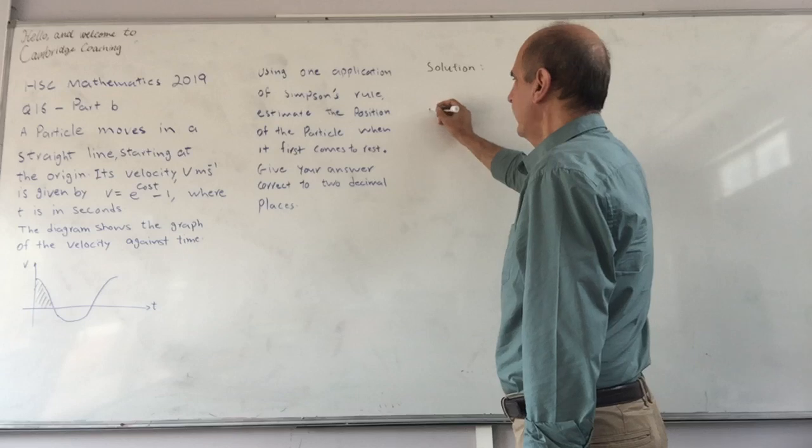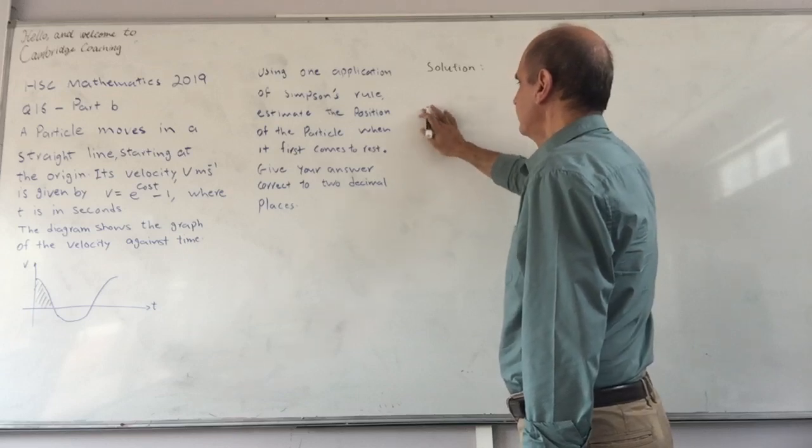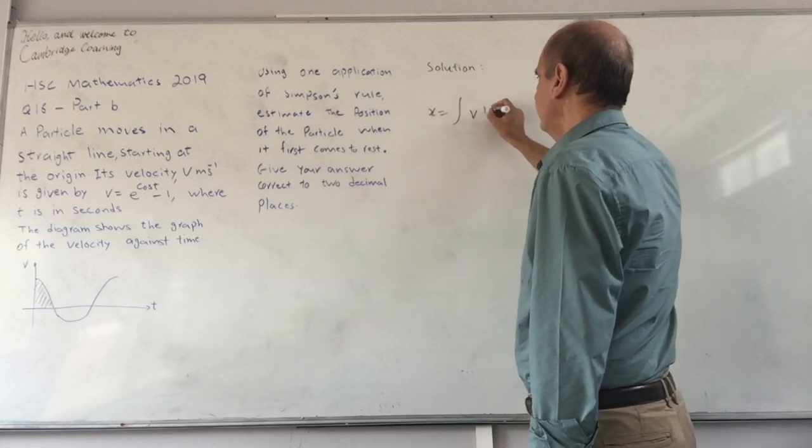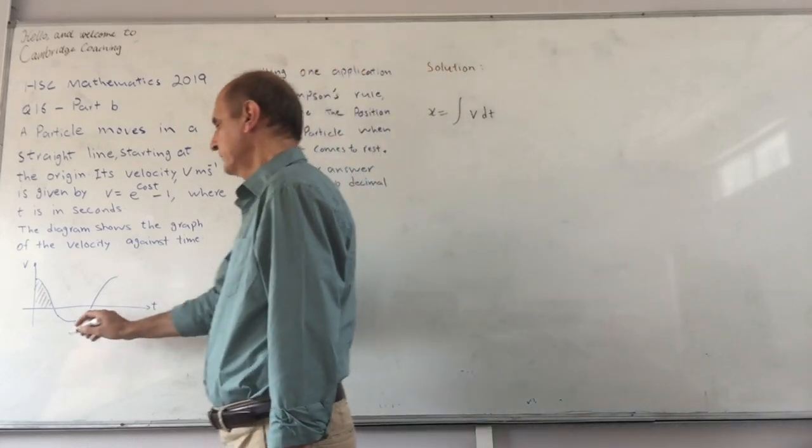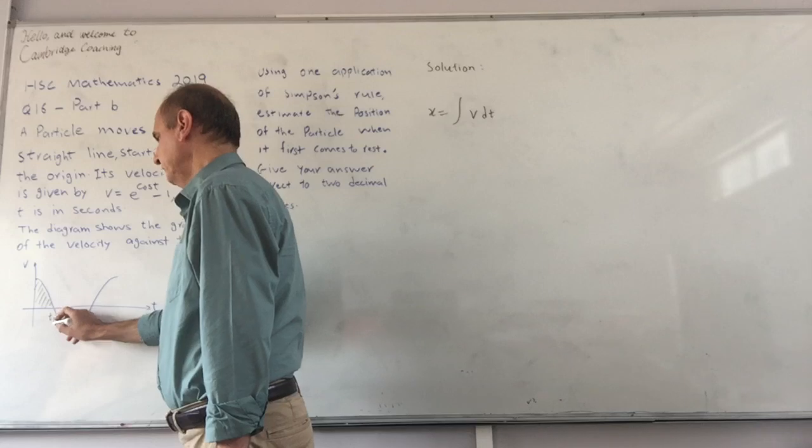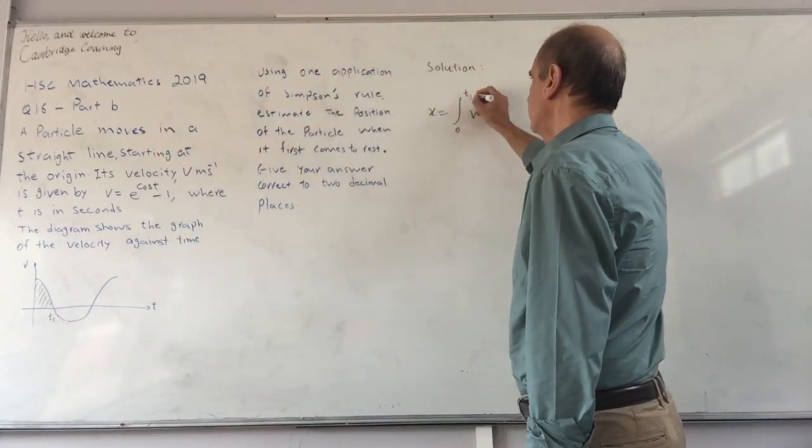So displacement x equals the integral of v dt. If I call this time zero and this time t1, then it's from 0 to t1.